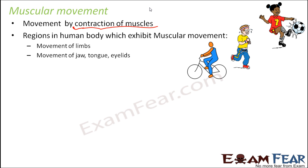When we say jaw, the upper jaw is fixed because there are immovable joints there. But the lower jaw is movable, and muscles are involved in the lower jaw as well. The tongue, eyelids — all of these move and they all have muscles involved.